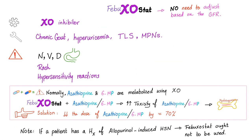Febuxostat: good news — there is no need to adjust the dose based on GFR. Bad news — it's more expensive than allopurinol. It is also a xanthine oxidase inhibitor. Medical uses include chronic gout, hyperuricemia, tumor lysis syndrome, and myeloproliferative neoplasms. If a patient has a history of allopurinol-induced hypersensitivity reaction, do not give febuxostat, as they will usually get the same reaction. The same drug-drug interaction applies because febuxostat also inhibits xanthine oxidase.